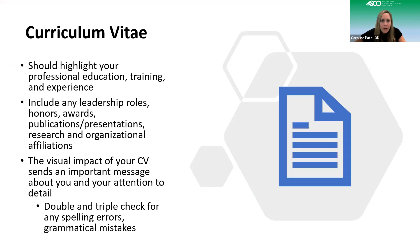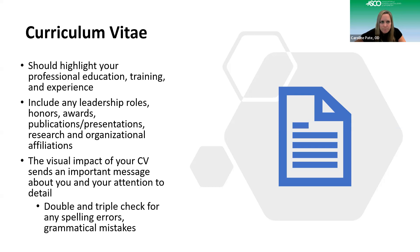Your curriculum vitae is another important part of your application. A CV is similar to a resume but more detailed and highlights your professional career. At this point it is okay for it to be over one page in length — it is a permanent work in progress you will continually update throughout your career. It should highlight your professional education, training, and experience, including your optometry school, undergraduate education, and any other graduate degrees. List where you've done your externships and even internal or special rotations, especially relating to the specialty area or residency you are interested in. Include leadership roles, honors, awards, presentations, publications, research, and organizational affiliations.